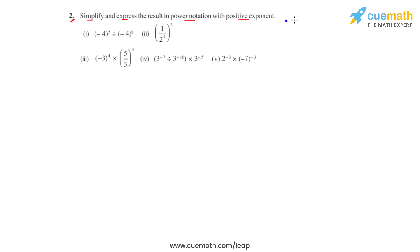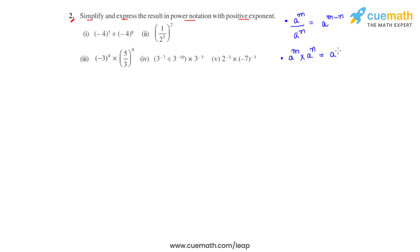The first law: a raised to m divided by a raised to n — the bases are the same and they're in division — so the powers get subtracted, giving us a raised to m minus n. The second law: a raised to m times a raised to n — the bases are the same and they're in multiplication — so the powers get added, giving us a raised to m plus n.